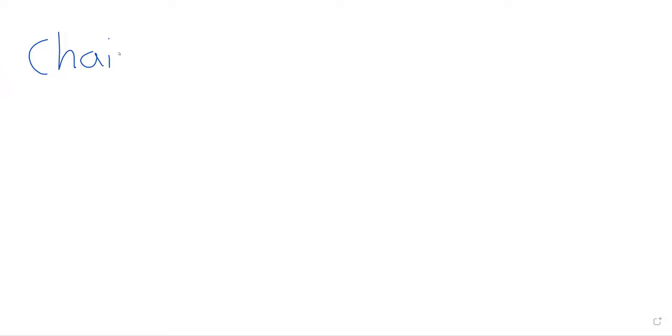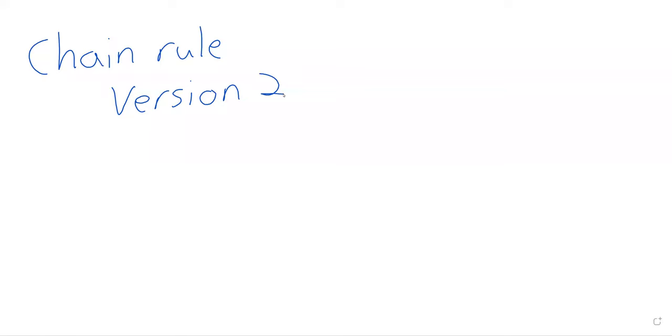Today we are going to continue the chain rule, although it might not look like we're continuing anything — it might look like a completely new topic. The chain rule is traditionally presented in two different ways: the day before yesterday was what the textbook calls version one, and today is what we call version two.